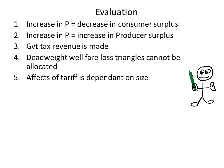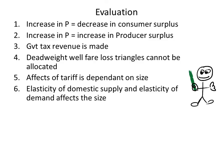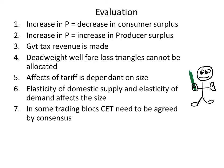Five: the effects of the tariff are dependent on the size of the tariff. This is a magnitude argument. Six: the elasticity of the domestic supply and the elasticity of demand affects the size of the tariff. Seven: in some trading blocks, for example the EU, common external tariff levels need to be agreed by consensus by its members — it is not a flexible economic weapon. Eight: because of the deadweight welfare loss, a tariff is an inefficient tax.